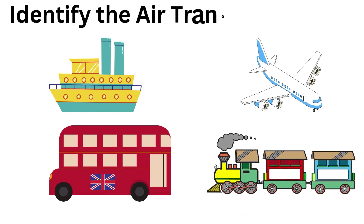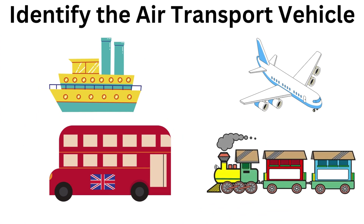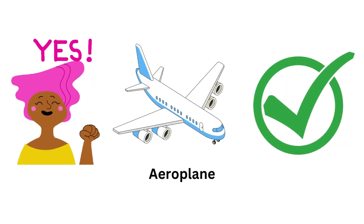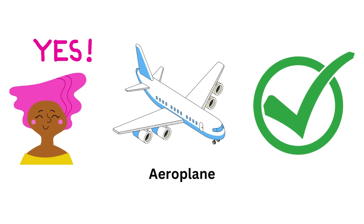Now, identify the air transport vehicle from the images shown here. Ship, Aeroplane, Bus, Train. Yes! Aeroplane is an air transport vehicle.